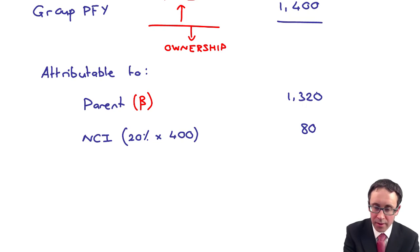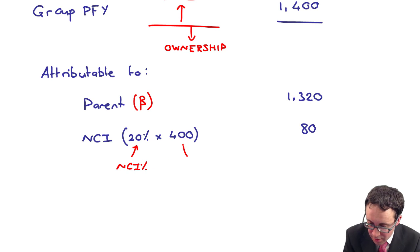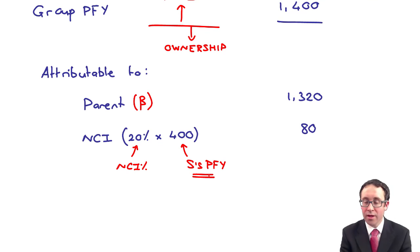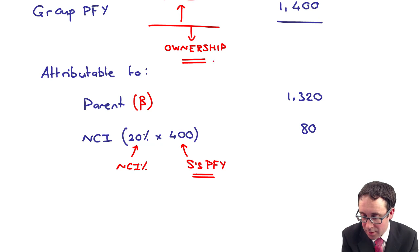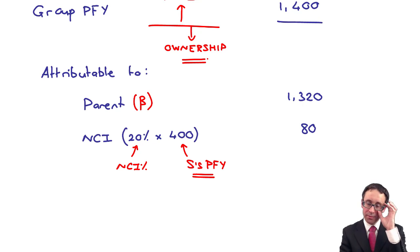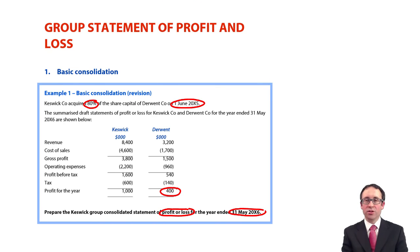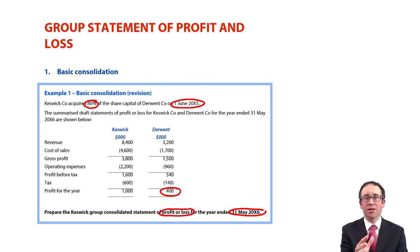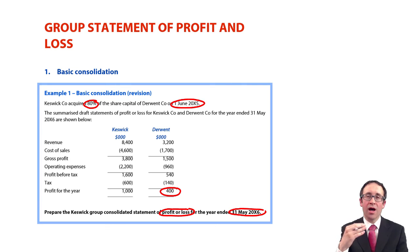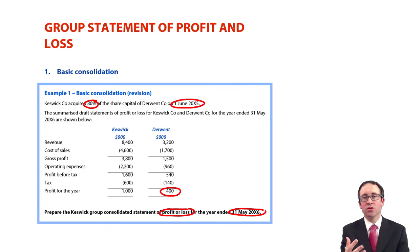There we go. Just a reminder: 20% is the NCI share, and the 400 is S's profits for the year. What we're doing here is showing ownership. That's very basic and straightforward — nothing too difficult — but it makes sure that we understand the fundamentals of a basic consolidation and demonstrate the principles of control by adding across 100% on a line-by-line basis, and then the other side being the ownership and what the non-controlling interest shareholders own of the subsidiary.